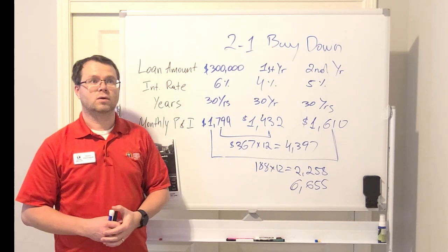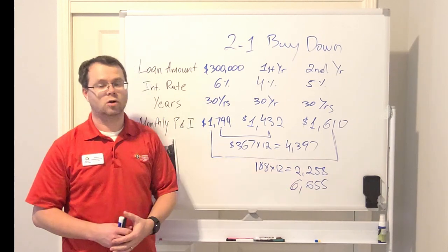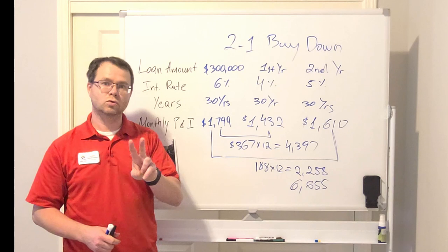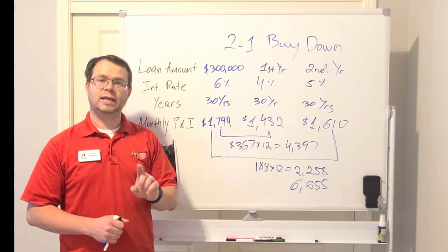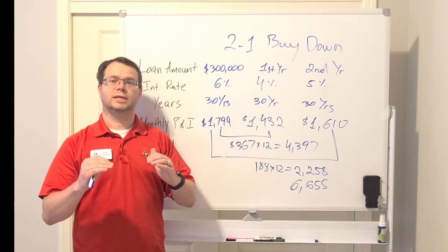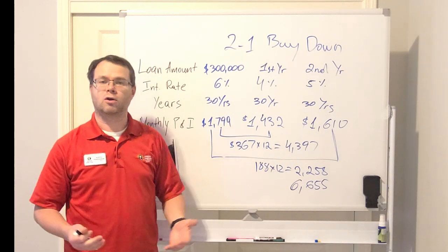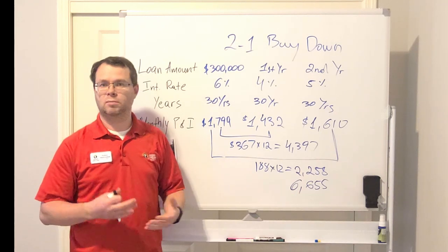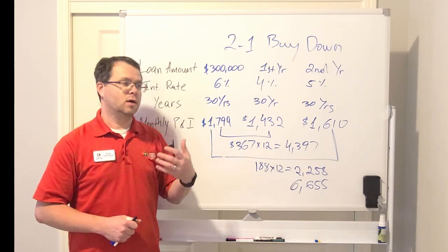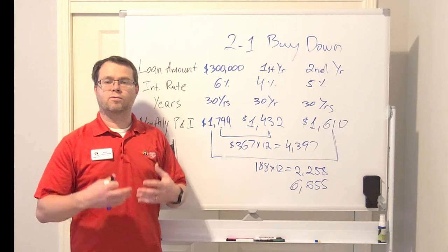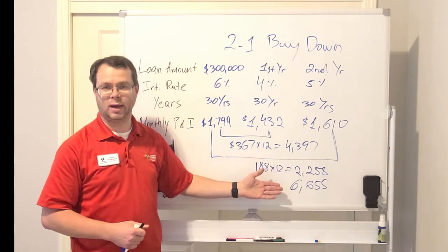Now, the question is, what is the benefit to the seller? Why would the seller offer you $6,600 as a credit? There's two benefits for the seller. Benefit number one is it eliminates a need of reducing the sales price. Let's say that the seller is trying to sell a house for $450,000, and the house has been sitting on the market for a while. Instead of reducing the sales price, the seller may offer a seller's credit for the rate buy-down or maybe for the closing cost. But in our case, it's the rate buy-down.